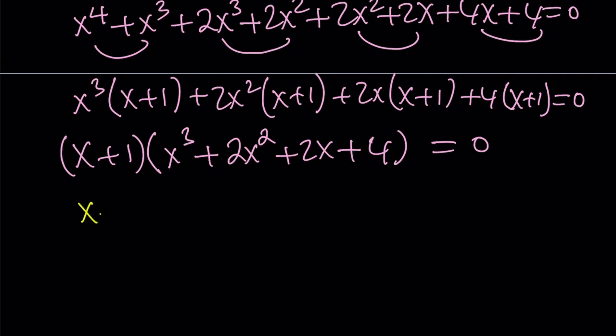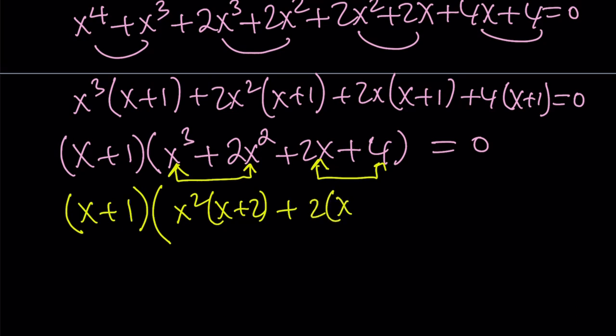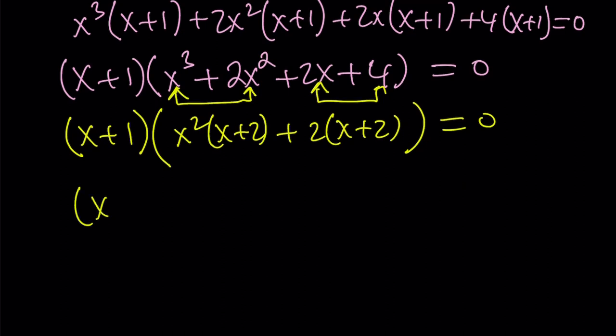So how do you factor it? You can just notice that these two terms have a common factor, and these two terms have a common factor, and one of the common factors happen to be the same thing. Now we get x²(x + 2) + 2(x + 2). So x + 2 is a common factor, and we can take it out. Here we can write it as (x + 2)(x² + 2) = 0.